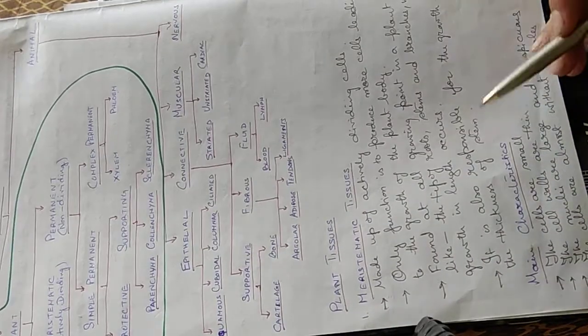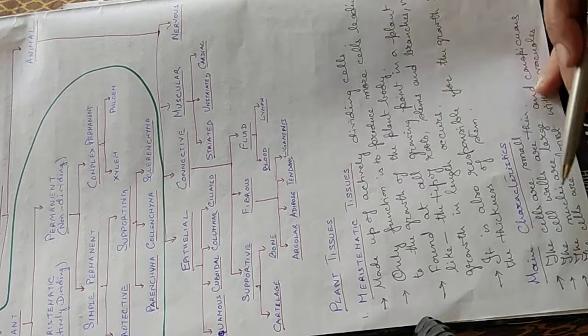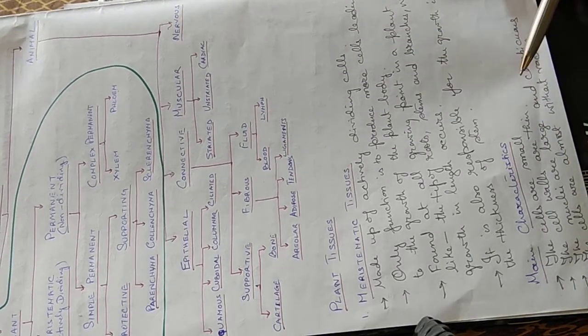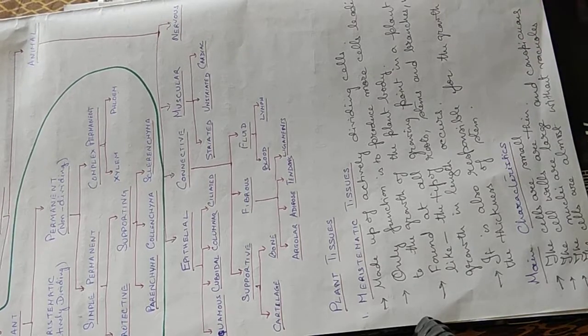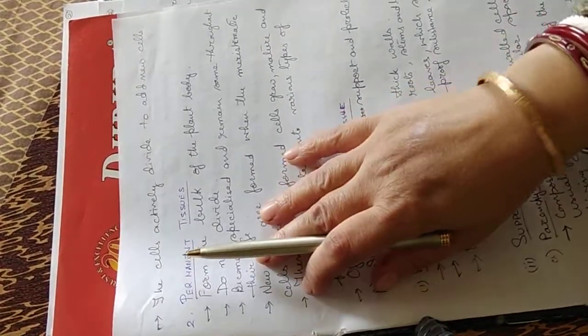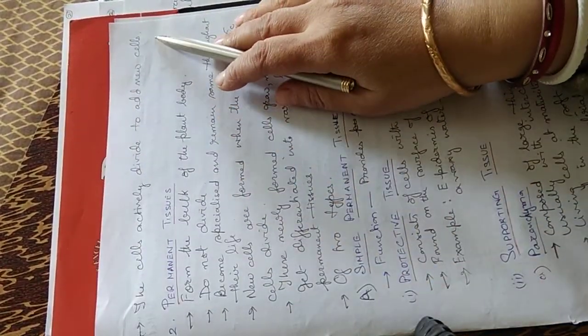The main characteristics of these meristematic tissue cells are: the cells are small, the cell walls are thin, the nuclei are large and conspicuous, the cells are almost without vacuoles, and the cells actively divide to add new cells.